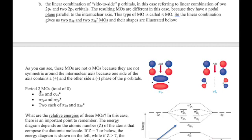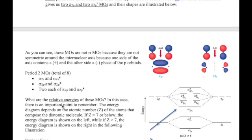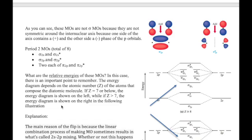To briefly summarize for the period 2 MOs: we get eight molecular orbitals formed by eight atomic orbitals — four from each atom, with one s and three p orbitals from each. Now, unlike atomic orbitals where the relative stability of orbitals is consistent across all elements — 2s always more stable than 2p, 2p always more stable than 3s — we actually see variation in the stability of these MOs depending on where you are in the periodic table.